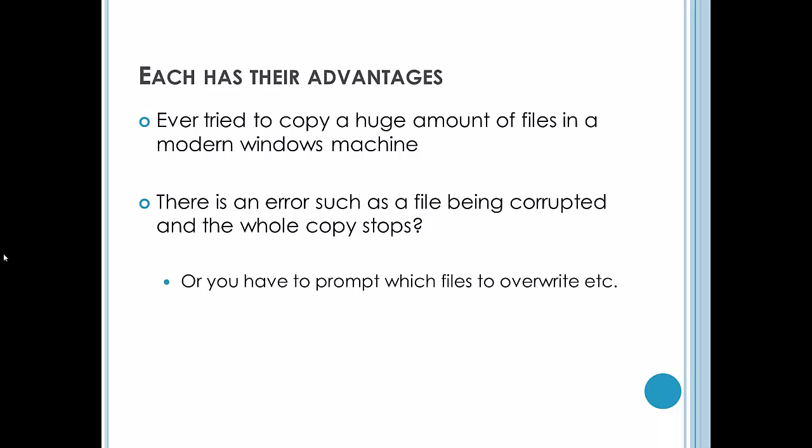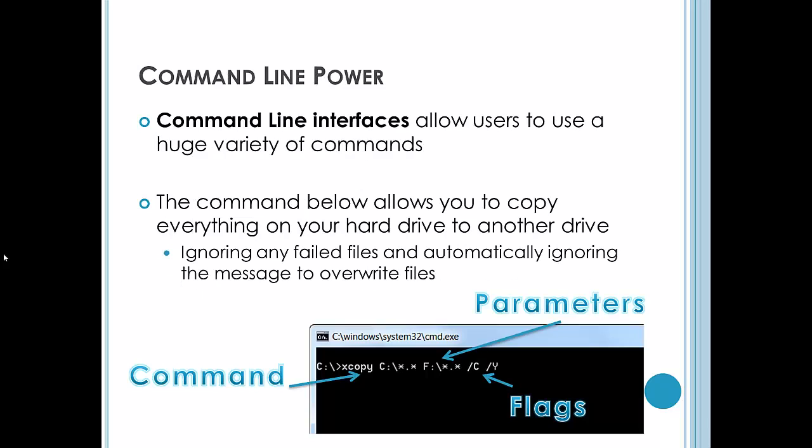Or you've got to go and prompt individual files to overwrite, not overwrite. Well, with a command line interface, you have one added advantage. If you look at this command down here, what you'll see is that's the command there, this X copy. That's what they call the parameters, so we're copying everything from the C drive to the F drive. And these flags here means it ignores any failed files and automatically ignores the message to overwrite files.